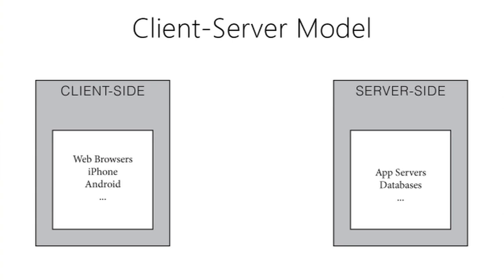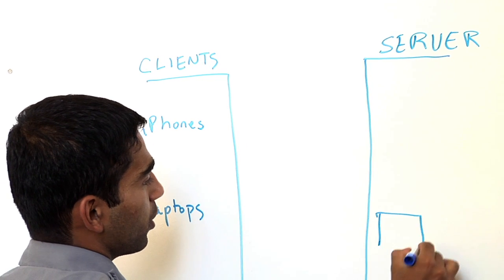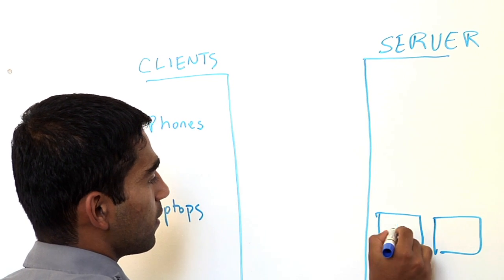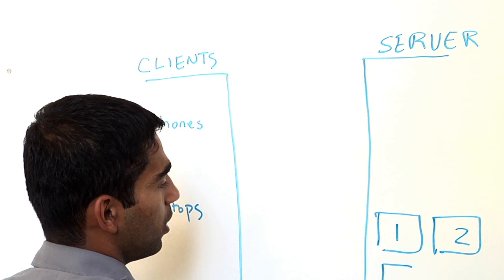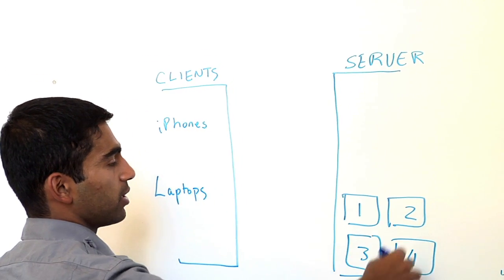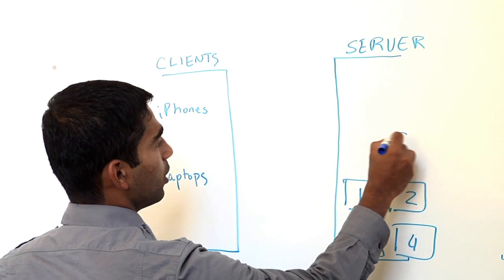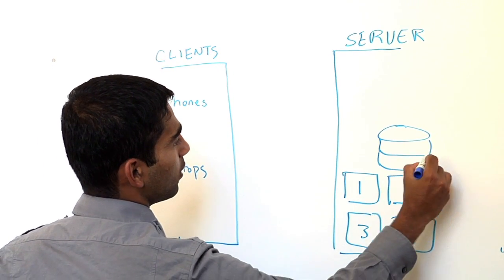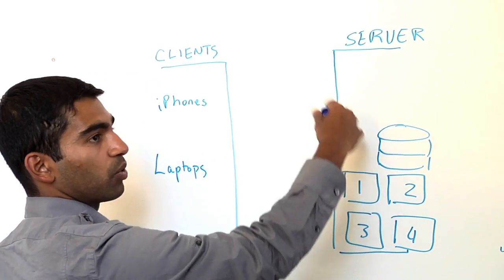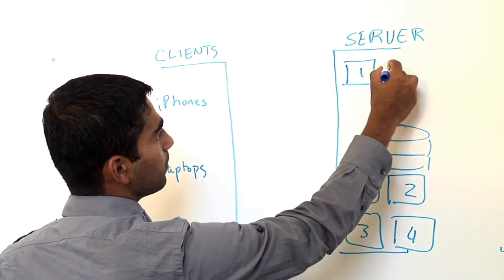Let's first draw what used to be the way we do things. On one side, you have your clients, and these clients could be anything like iPhones, Android devices, laptops, any sort of browser or client. And on the other side, you have your servers. So this is your back end stuff where you have all your different boxes, server one, server two, server three. These could be in a data center across the globe. And then you'll have your databases.